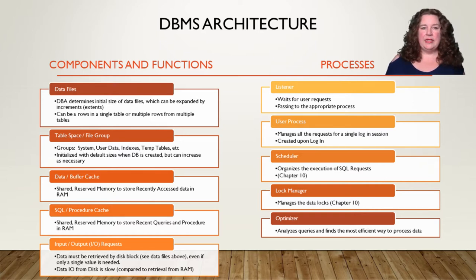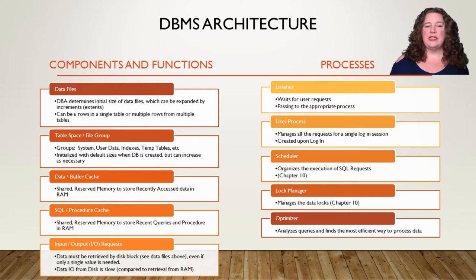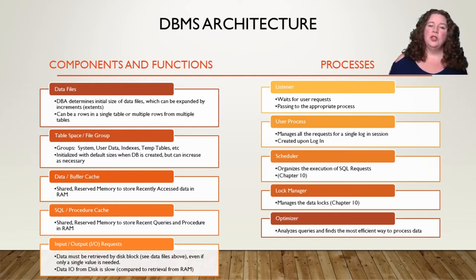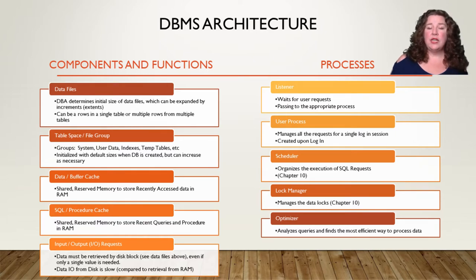When we create a database, there is a default number of table groups created, grouped in about five or six levels: system, user data, indexes, temporary tables, and more. These are all initialized with default sizes and can increase as necessary. As more data gets put into the database, obviously the size of our database will increase.